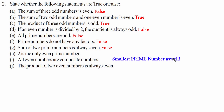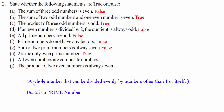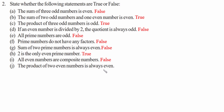Statement i — all even numbers are composite numbers. A composite number can be divided evenly by numbers other than 1 and itself, but 2 is a prime number, therefore statement i is false. Statement j — the product of two even numbers is always even. Taking 4 times 6 equals 24, which is even, so statement j is correct.